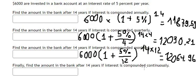The last one is continuous compounding. For continuous compounding, we will use E. So we have 6,000